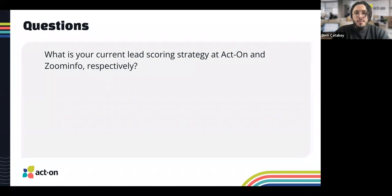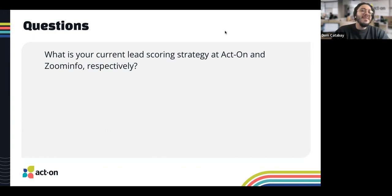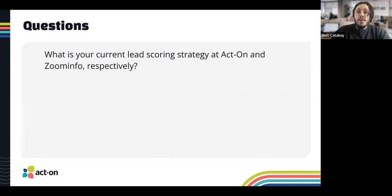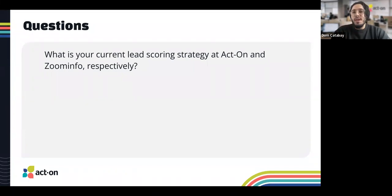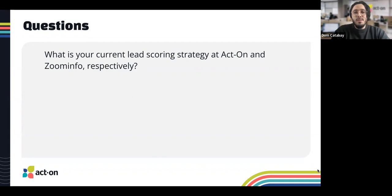At Act-On we have a pretty similar premise. For those of you who don't have a lead scoring strategy — that was about 45% in the poll — you can use Act-On to build it yourself. We combine firmographic and demographic components, but rather than assigning values to each individual attribute like job persona, title, industry, and location separately, we use those to place leads into specific buckets that receive additions to their lead score based on which bucket they land in.